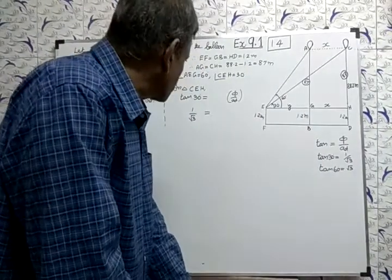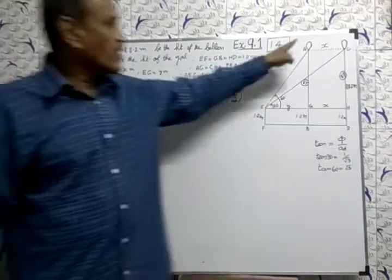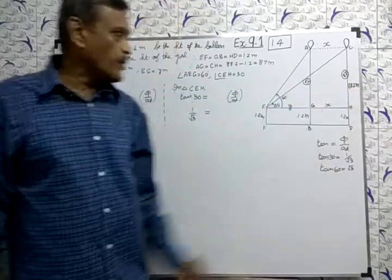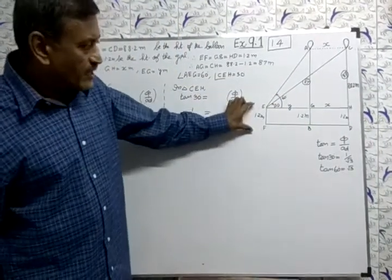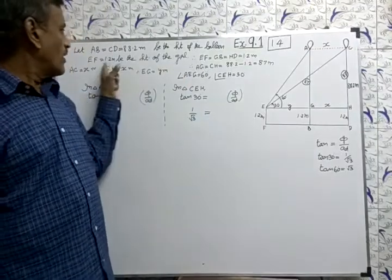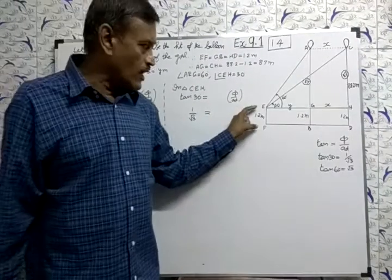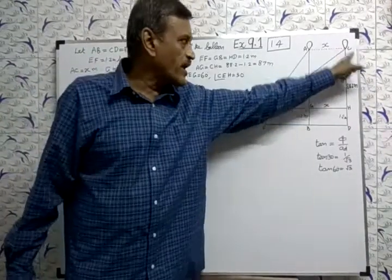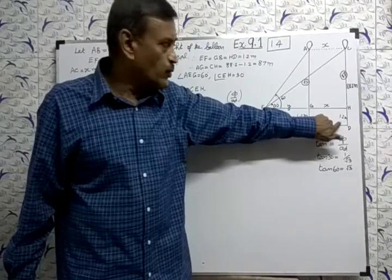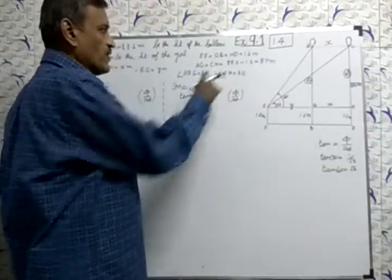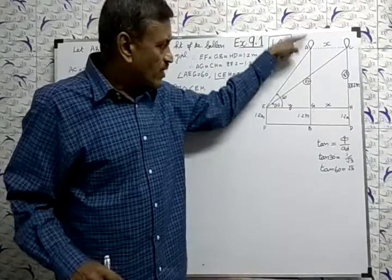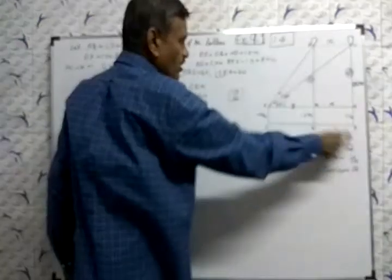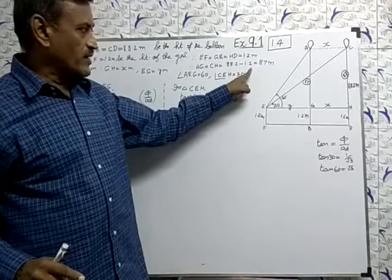AB and CD be the height of the balloon, both of them 88.2 meters. Height of the girl is 1.2 meter. Let EF equal to 1.2 meter be the height of the girl. So I can subtract 88.2 minus 1.2 and get 87. AG equal to 88.2, the total height minus height of the girl. So you get 87 meter after separating 1.2 from 88.2.